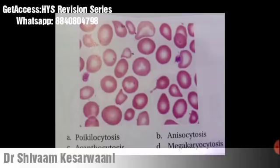We have discussed bite cells and spherocytes. Bite cells have a marginal loss of membrane, while schistocytes are helmet-shaped cells with a bigger loss of membrane — caused by fragmentation on an artificial heart wall. Spherocytes are seen in hereditary spherocytosis. These represent different sizes and types of RBCs.